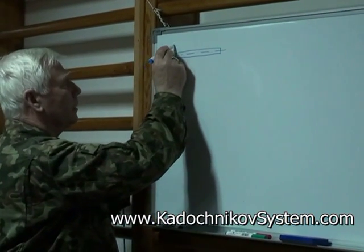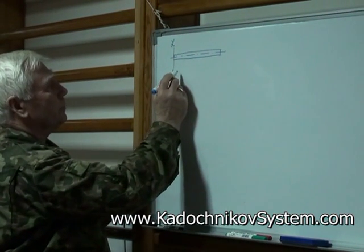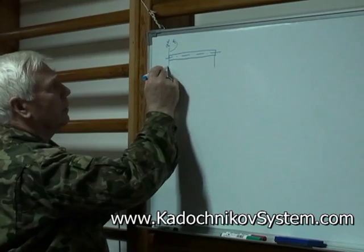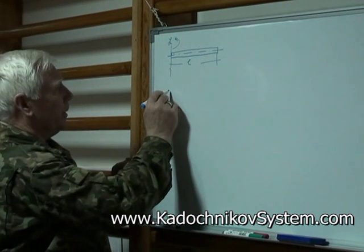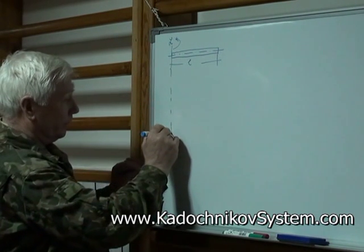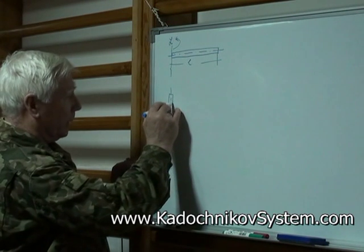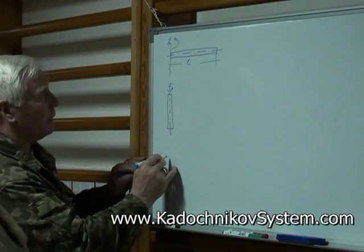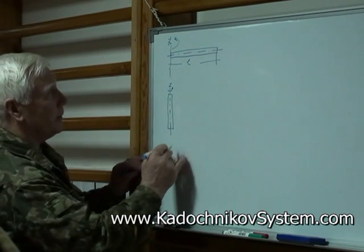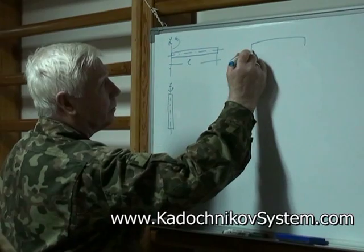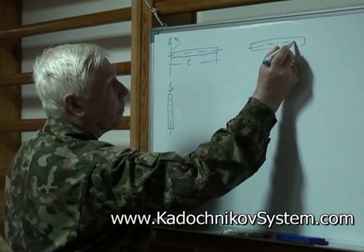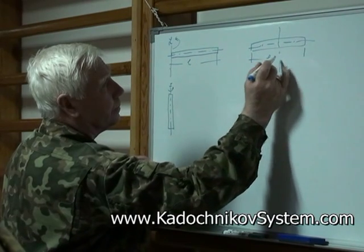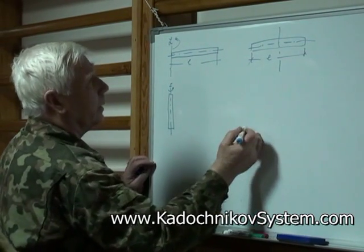Let us consider axis z. We rotate the object in this direction — that will be its length. Now let axis z be the axis and the object will be rotated like this. Looking at it from the end, or from the middle — it is all the same. In this case, the moment of inertia is close to zero.